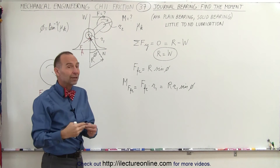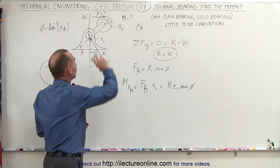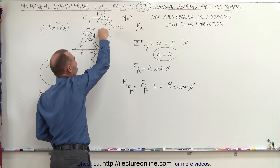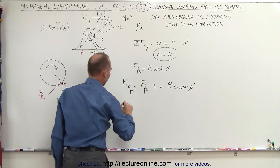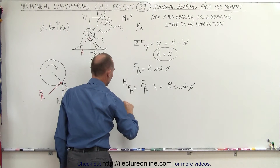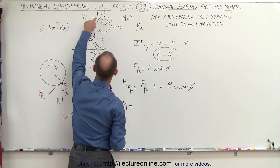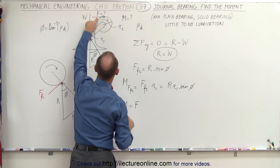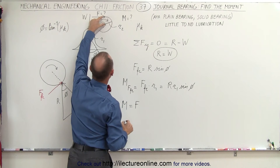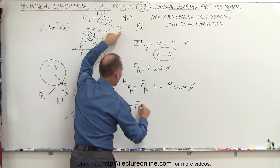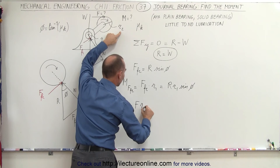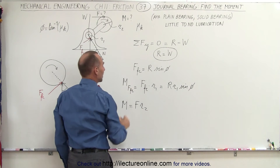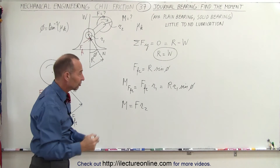If we want to apply a force to the wheel to overcome the friction and cause it to turn, the moment is also equal to the applied force times the moment arm — the radius of the wheel, which we call r2. So that moment is F × r2, and these two moments must be equal but opposite in direction.